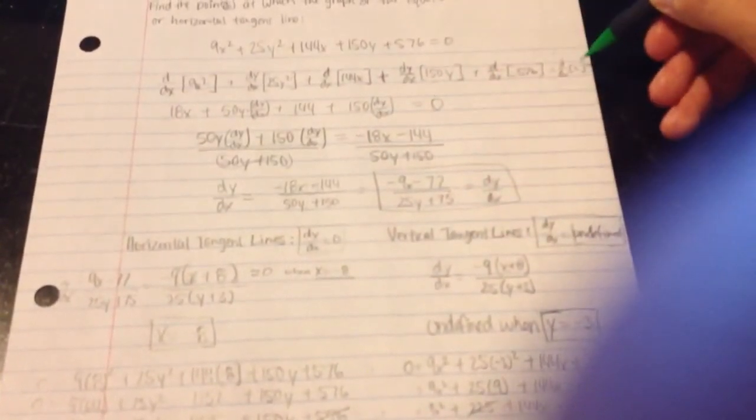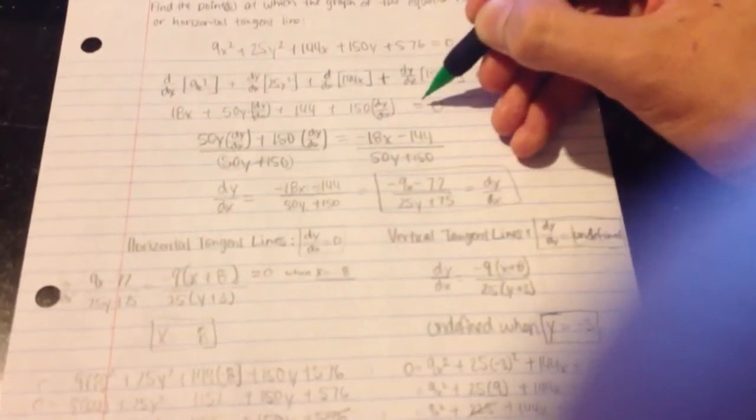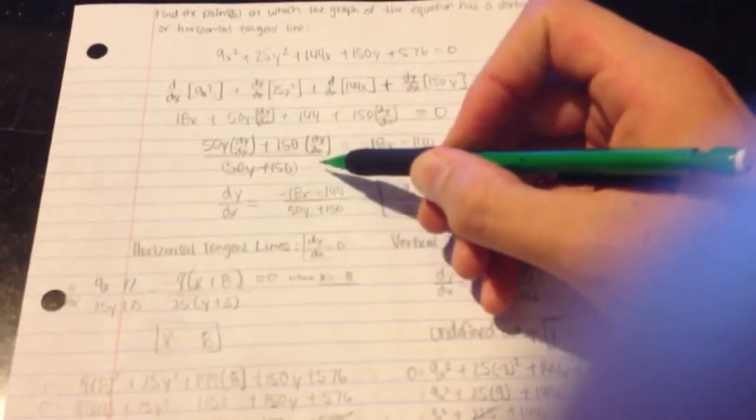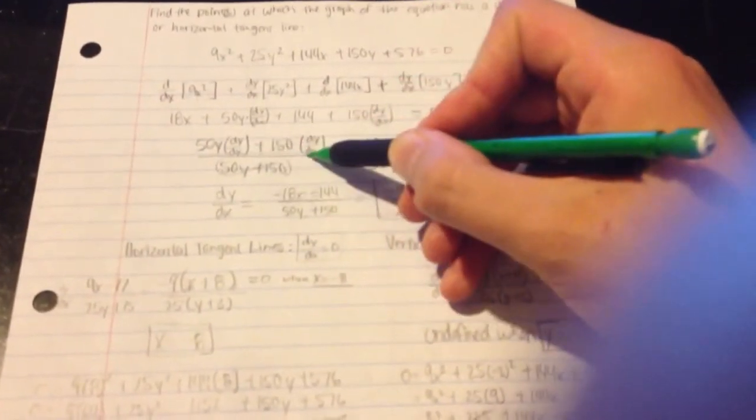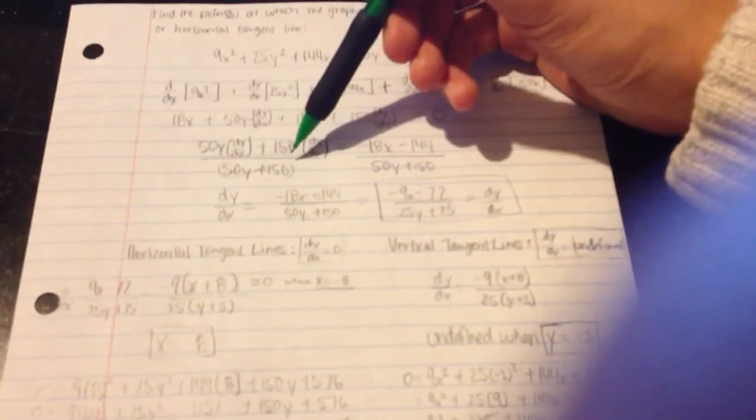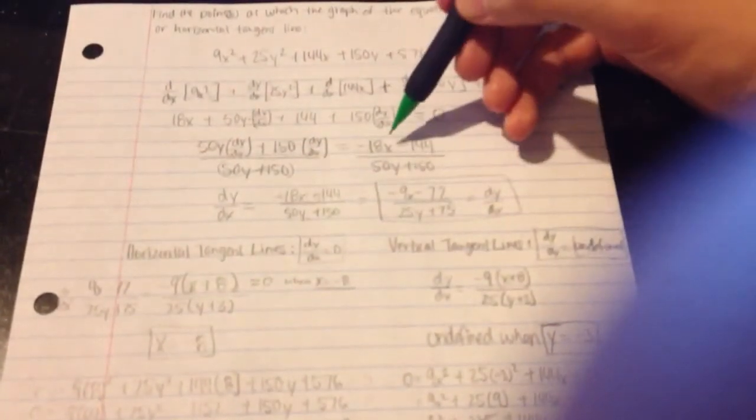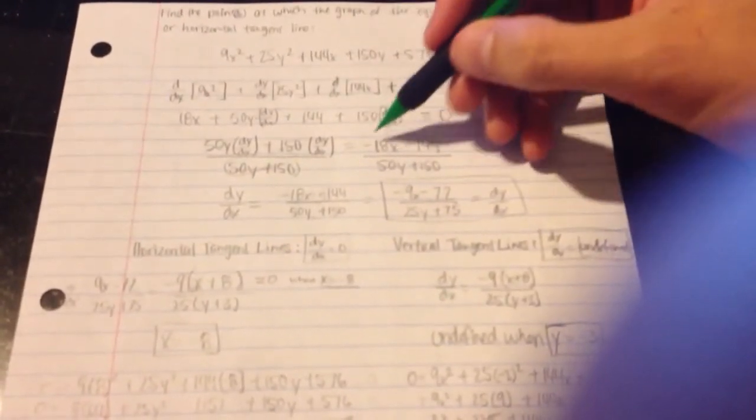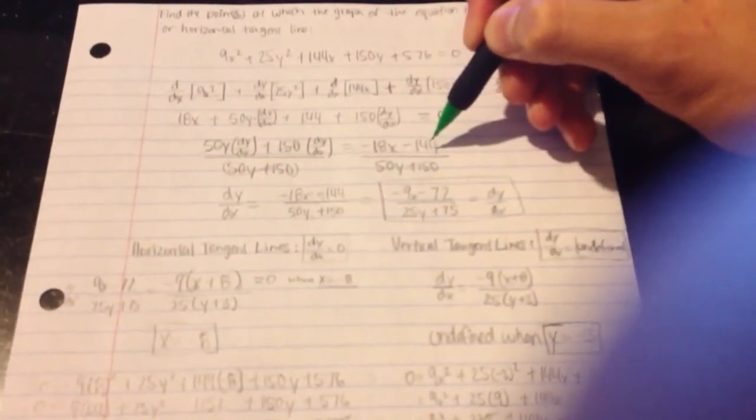150y will leave you with a positive 150 dy dx. The derivative of 0 is simply 0. Now, at this point, I'm just going to algebraically manipulate the equation so that I get my dy dx all on one side. I'll divide by 50y plus 150, and I'll also move the 18x and the 144 over, making these negative as they enter the other side.